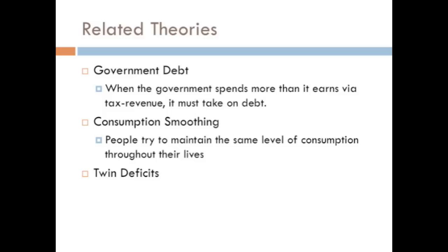The next one, consumption smoothing, is when people try to maintain the same level of consumption throughout their lives. This means that when they earn more in the beginning of their lives, they will save so that they can spend more when they're earning less.